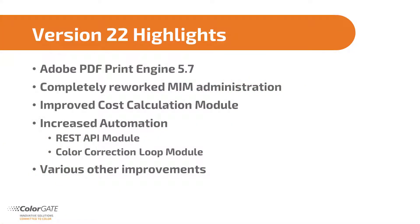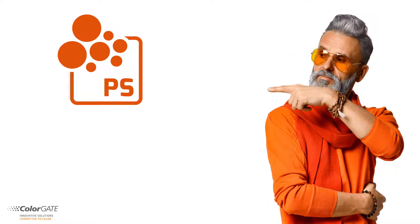In version 22, we have again implemented the latest version of Adobe's PDF Print Engine. Our MIM administration has been revised. DTG users and sign printers can now utilize new features in the Cost Calculation module. The REST API module has been extended and covers more functions. The Color Correction Loop module has received several functional improvements. Discover this and more in this video.